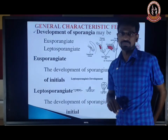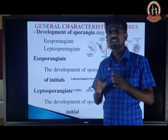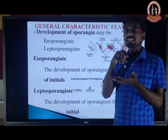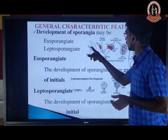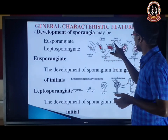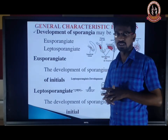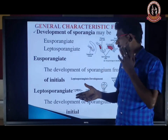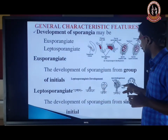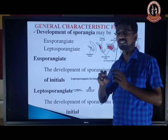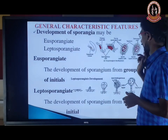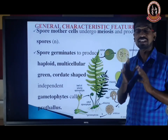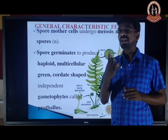Based on sporangium development, Pteridophytes are classified into two types: eusporangiate and leptosporangiate. In eusporangiate, a group of initial cells is responsible for forming the sporangium. In leptosporangiate, a single cell acts as the initial to form the sporangium. The spore mother cell inside the sporangium undergoes meiosis (reduction division) to form four haploid spores — the spore tetrad.